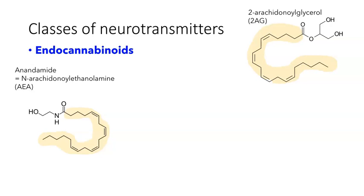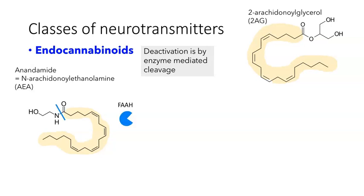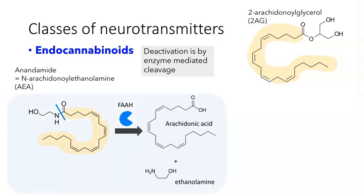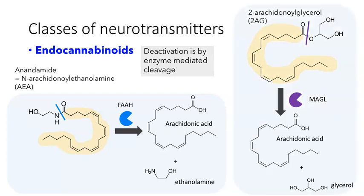All neurotransmitters need a way to be deactivated. For endocannabinoids, the process involves some enzymes. For example, for anandamide there is an enzyme called FAAH — fatty acid amide hydrolase — which clips the molecule to generate arachidonic acid and ethanolamine. There is a similar enzyme called monoacylglycerol lipase that clips 2-AG to form arachidonic acid and glycerol. In either case, the arachidonic acid can be recycled to form new endocannabinoids.